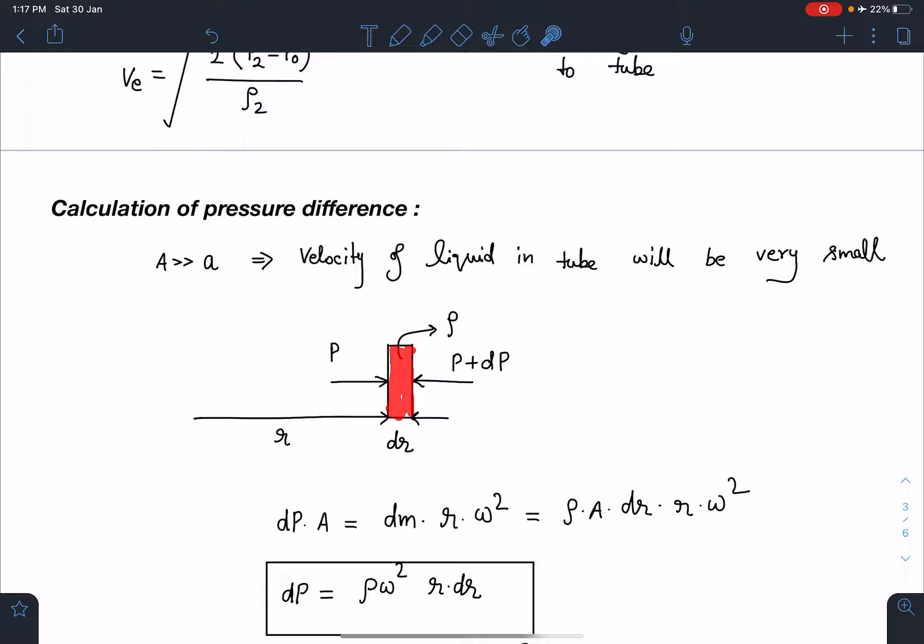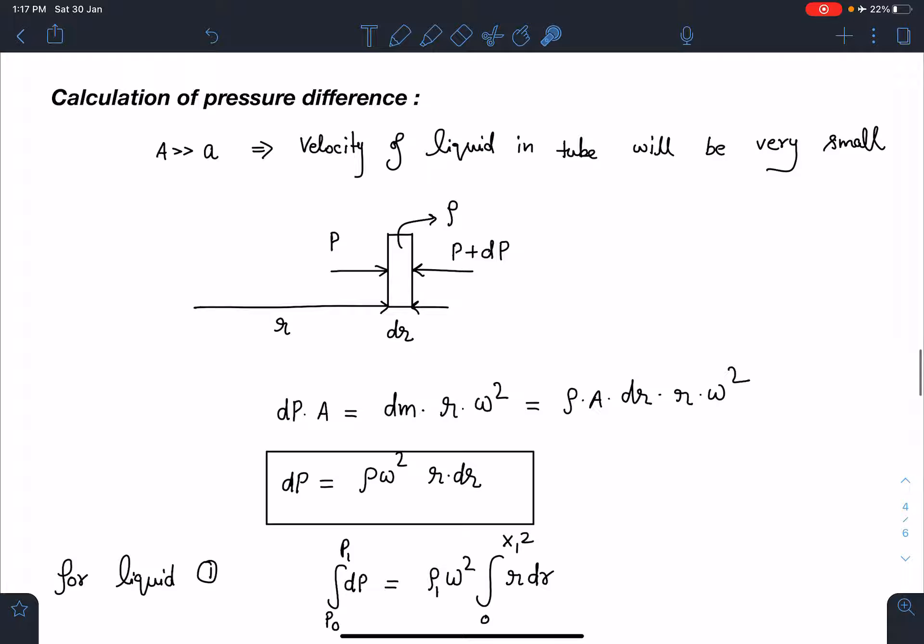If that is negligible I can do the balancing here. I will take at a distance of r I will take one liquid element of thickness dr. Here the pressure at r is p and pressure at r plus dr is p plus dp. The net force towards the center is going to be dp into a and that is going to provide acceleration of r omega square to mass dm. dm value I am going to substitute which will be rho a dr.